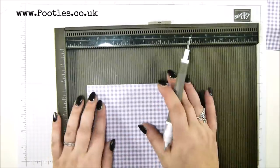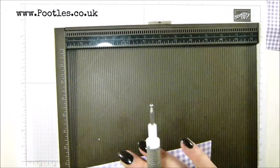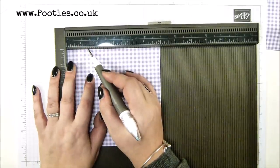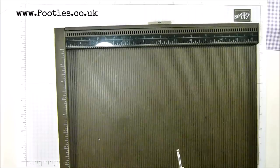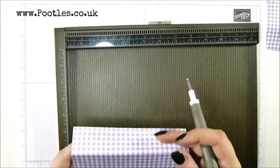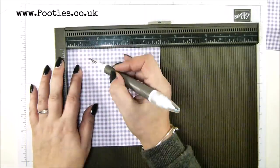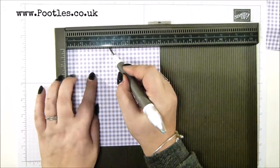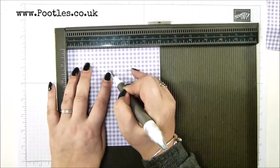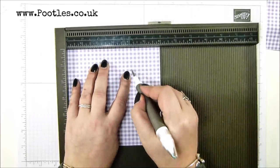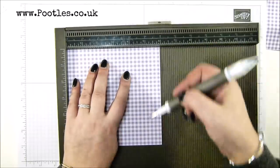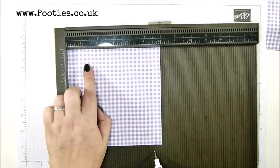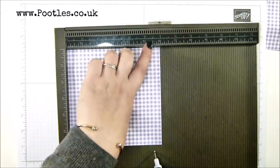And then turn it to the side and score it only to the first score line. So we're only going to score it there at one and three eighths of an inch. One and three eighths of an inch, two and three quarters, four and one eighth. And then this final one, we're going to come all the way down five and a half. So in metric, that's three and a half, seven, 10 and a half, and then all the way down at 14.